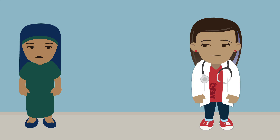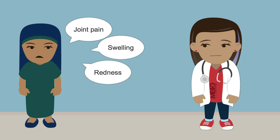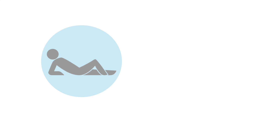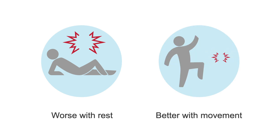When RA patients come to you, they complain of joint pain, swelling, redness, warmth, and morning stiffness lasting for hours. They report having a weak grip, difficulty making a fist, dropping things to the ground, and have other limitations with their daily activities. Because this is an inflammatory joint pain, symptoms get worse in the mornings or after prolonged periods of rest, and can improve with movement.